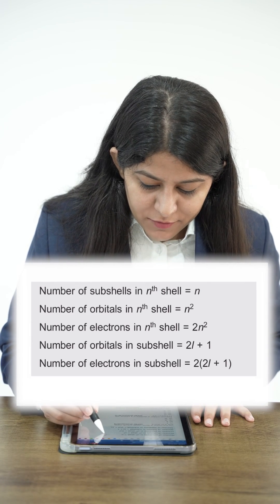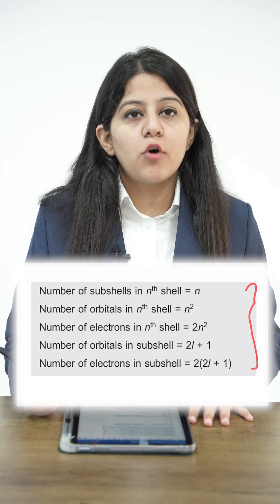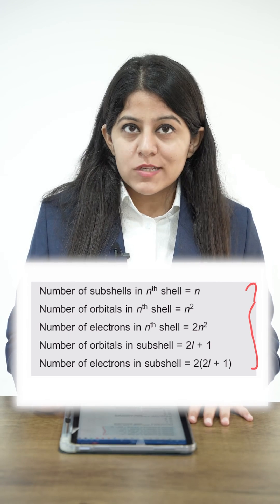The five formulas are written in front of you. Number of subshells in nth shell is n. Number of orbitals in nth shell is n². Number of electrons in nth shell is 2n².